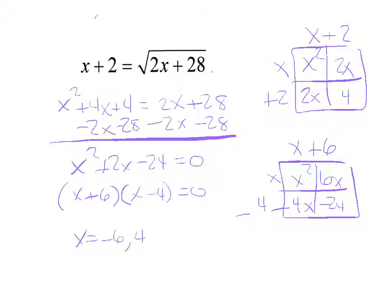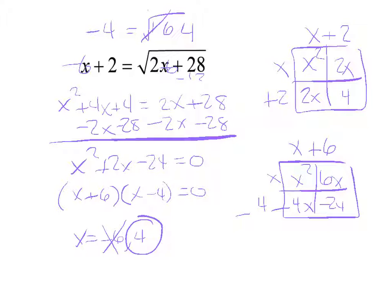Let's try x equals negative 6. Plugging in: negative 6 plus 2 is negative 4. Then negative 6 times 2 is negative 12, and negative 12 plus 28 is 16, and the square root of 16 is 4. So negative 4 equals 4 is not true — negative 6 is not a solution. Just x equals 4 is the answer.